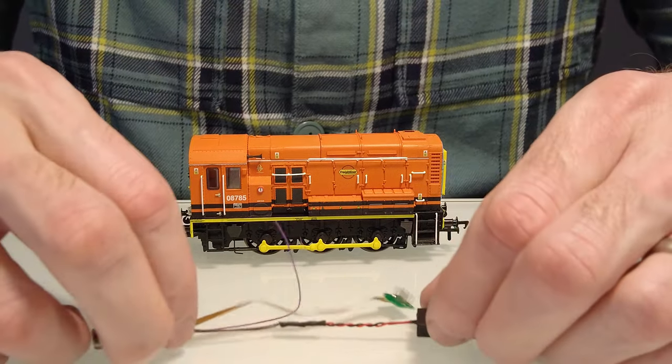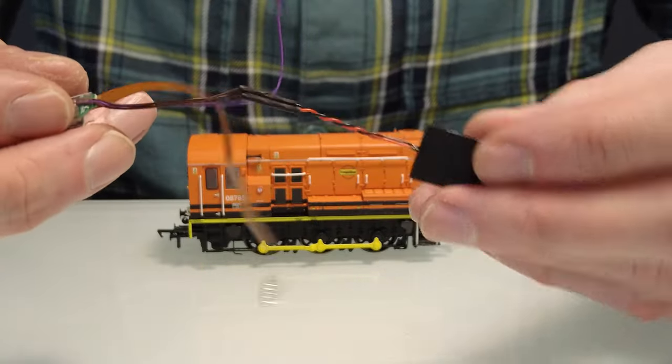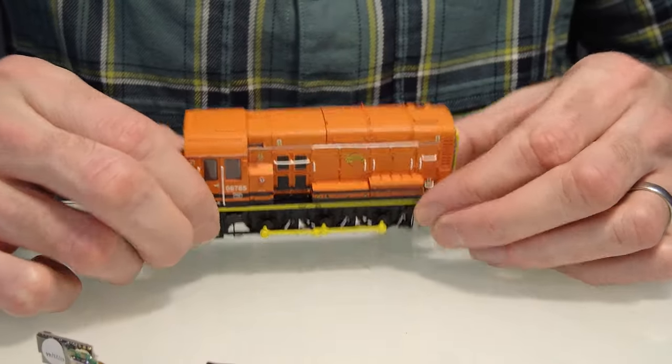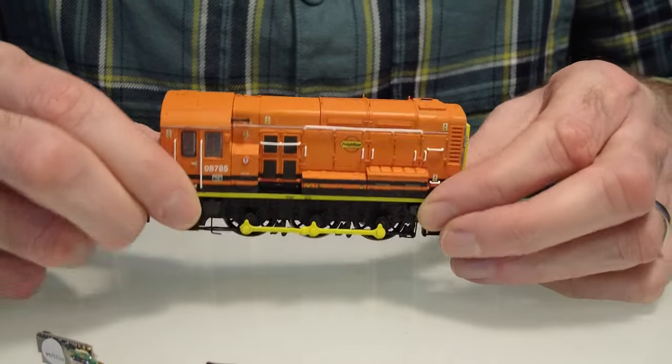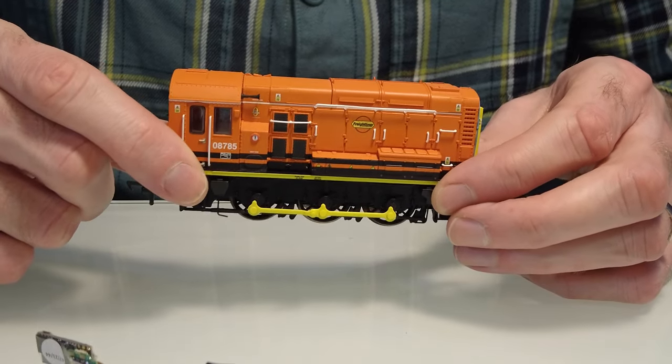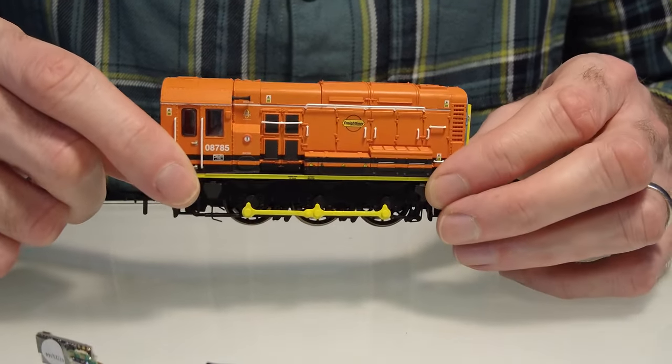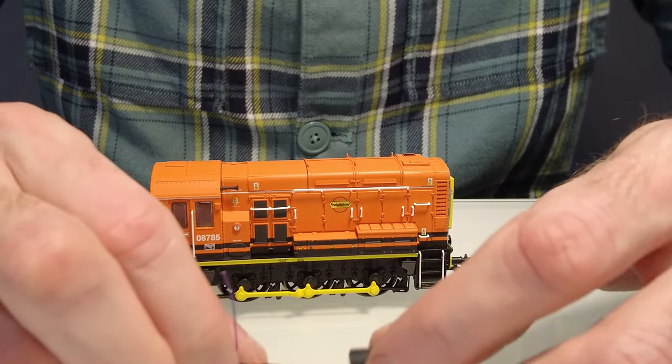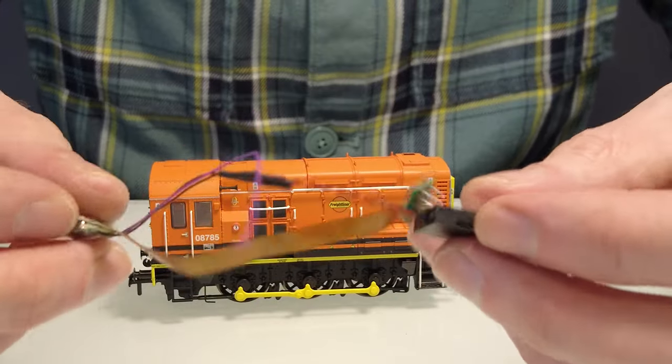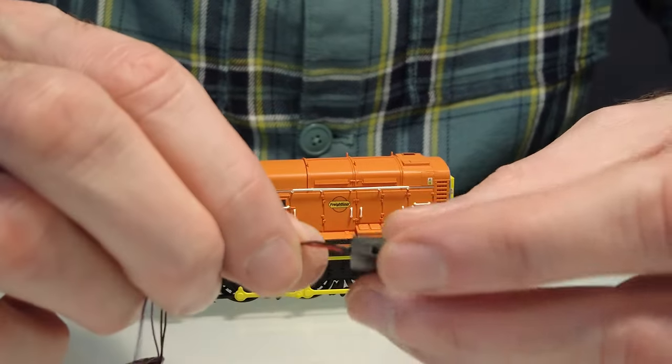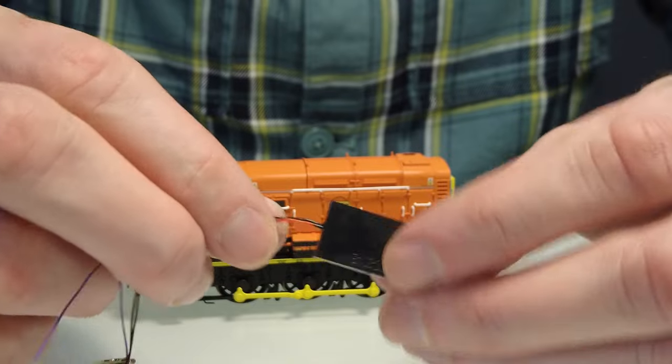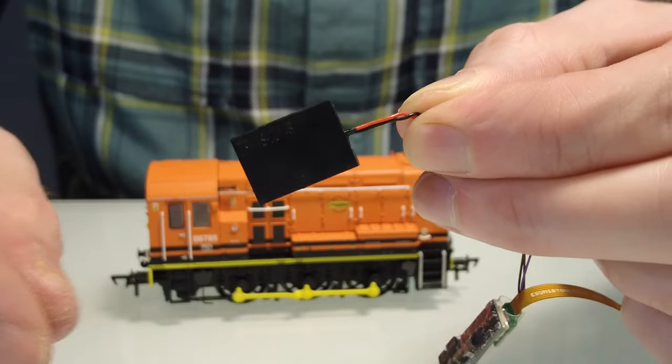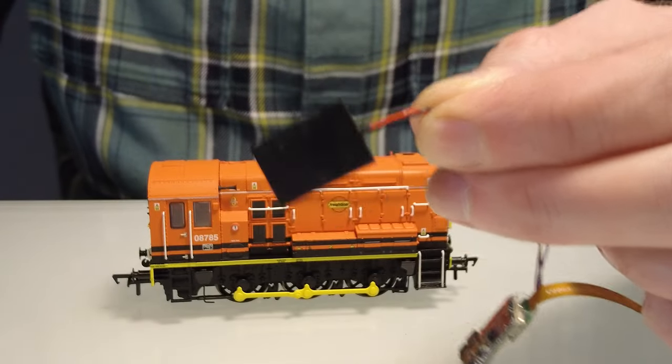So I'm going to use one of the LockSound 5 Micros. I'm going to use the ESU Hi-Fi Sound in this model because it's one of the really cheap models from Rails of Sheffield. I think it was £79.99 when I bought it. I know quite a few people have bought them because they've asked me about sound for them. So I'm going to use the LockSound 5 Micro with the ESU Hi-Fi Sound which is ESU's own sound file. It's very good actually. And I'm also going to use one of these 20x14 speakers like I used in the Class 11 recently.